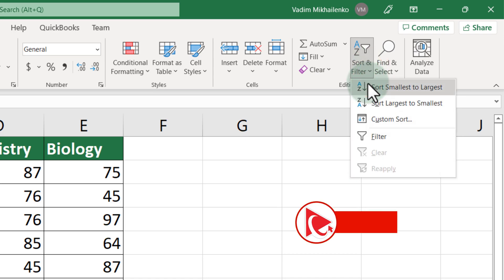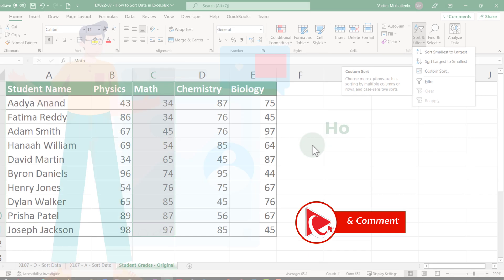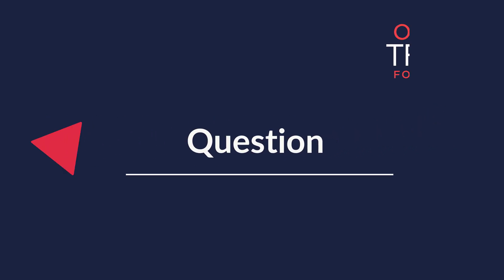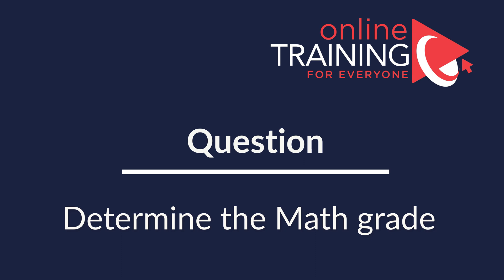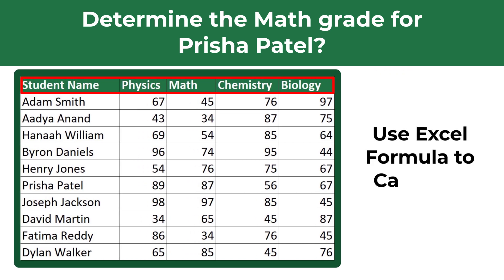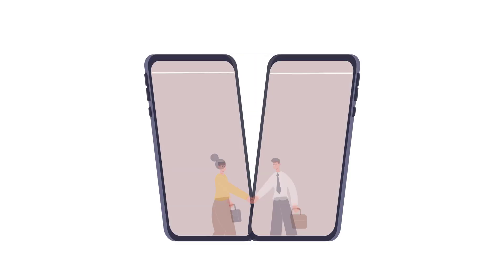To recap: to sort the data in Excel you need to either use Sort Smallest to Largest or Custom Sort functions. Hopefully you've nailed this question and now know how to answer similar problems on the test. Here's a very interesting problem where you need to determine a value using INDEX and MATCH Excel formulas. Specifically, you need to determine the math grade for Prisha Patel. You're presented with a range of values which includes student name, physics, math, chemistry, and biology grades, and you need to enter a formula to calculate the value.